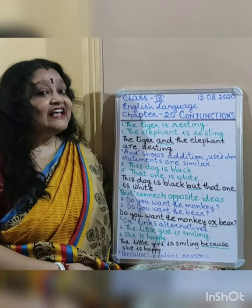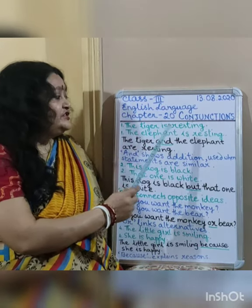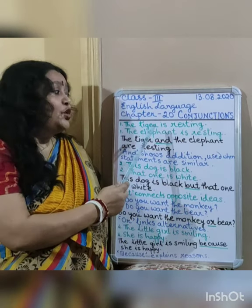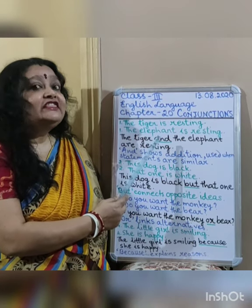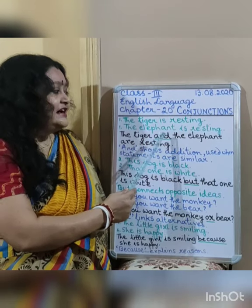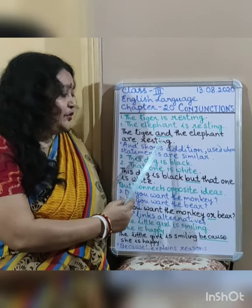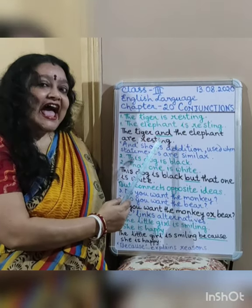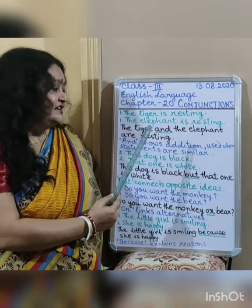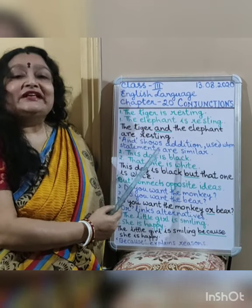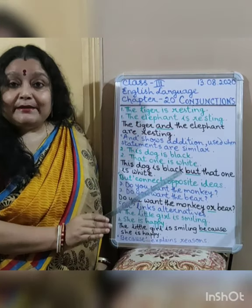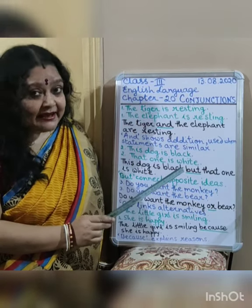As I told you, the tiger is resting. The elephant is resting. We join these two sentences with the conjunction AND: the tiger and the elephant are resting. AND is a conjunction which shows addition and is used when statements are similar, of the same meaning, or doing the same work.